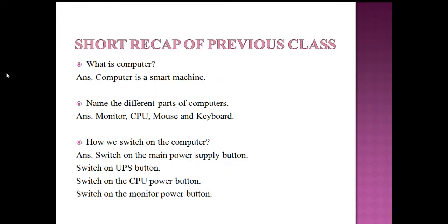This is the short recap of our previous class in which we have done what is computer. We know computer is a smart machine. Name the different parts of computer. Basically computer system has four parts: monitor, CPU, mouse and keyboard.